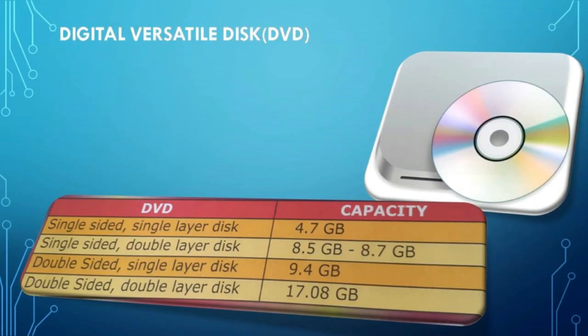DVD — digital versatile disk. DVD is a storage device used to store large amounts of data, more than a compact disk. It was developed in the year 1995. There are two types of DVD namely recordable and rewritable. DVDs are also available with different storage capacities: single sided single layer disk has a capacity of 4.7 GB; single sided double layer disk has a capacity of 8.5 GB to 8.7 GB; double sided single layer disk has a capacity of 9.4 GB; and double sided double layer disk has a capacity of 17.08 GB.